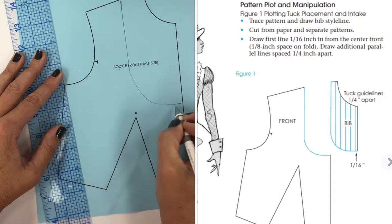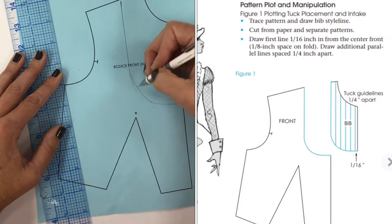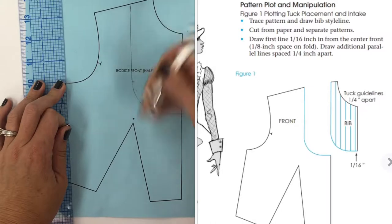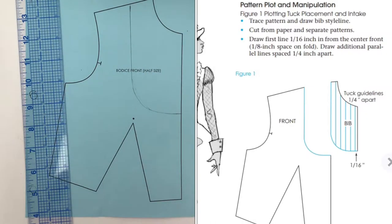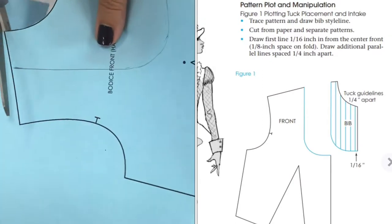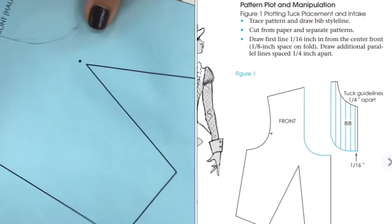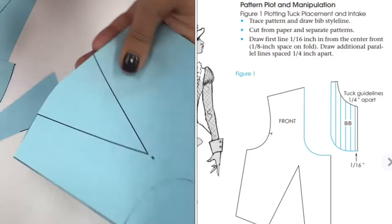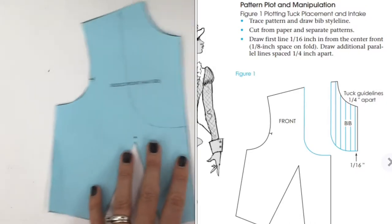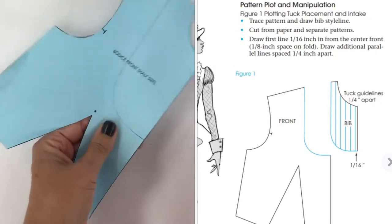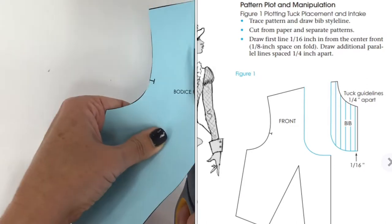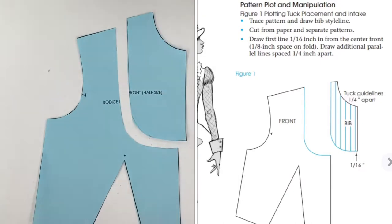Whatever you think looks the best. I think I want more curve. I don't like my curve. That's just subjective, you don't have to copy me. If you like the first curve, do your first curve. Now they want us to cut it from paper and separate our patterns.